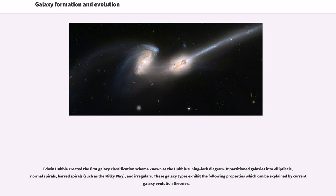It partitioned galaxies into ellipticals, normal spirals, barred spirals such as the Milky Way, and irregulars.